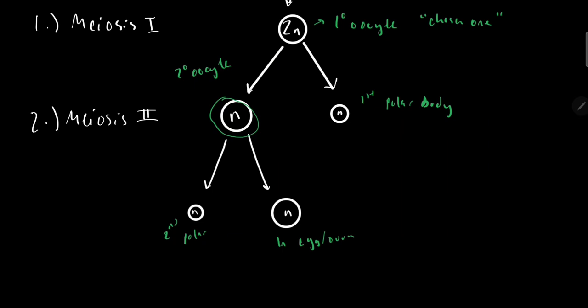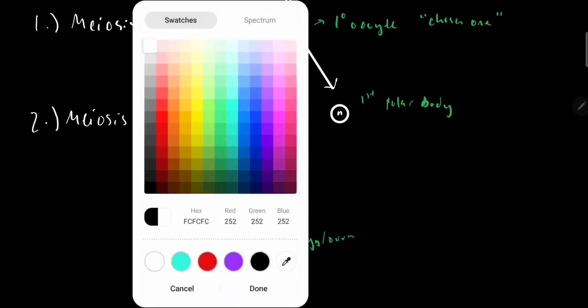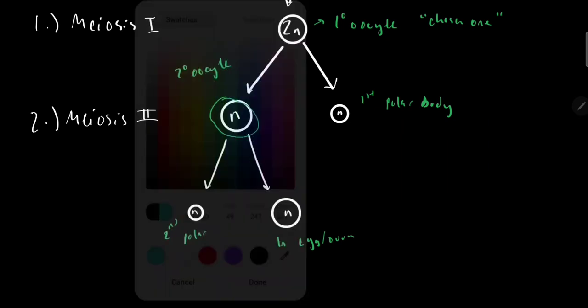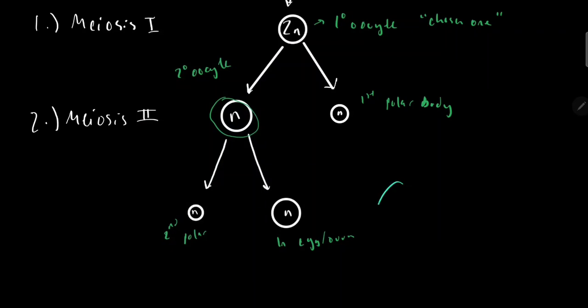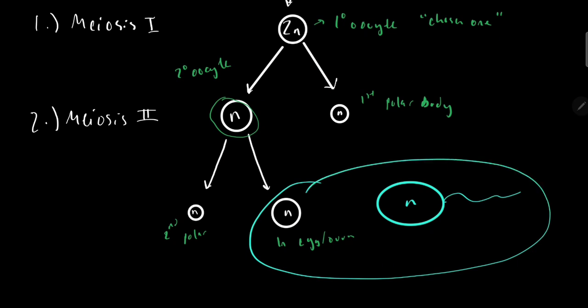And then what this will do in the future, once the sperm comes right here, and that is an N, fertilization will occur between the sperm and the egg, and it will form a 2N zygote.